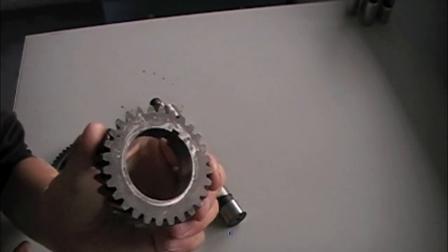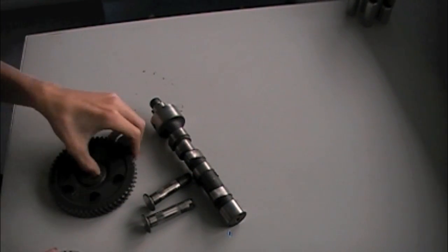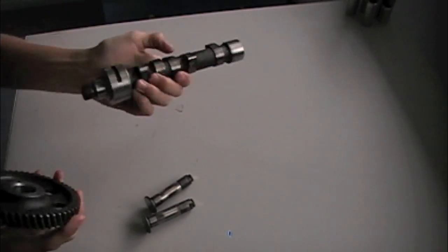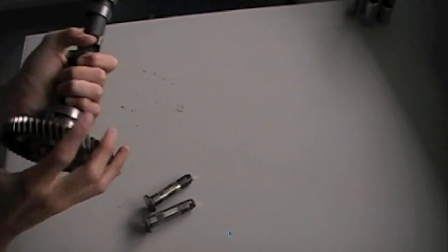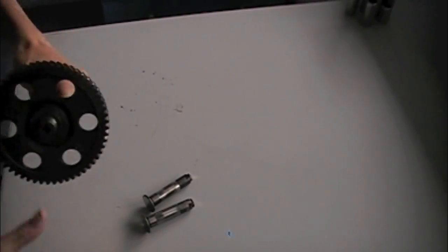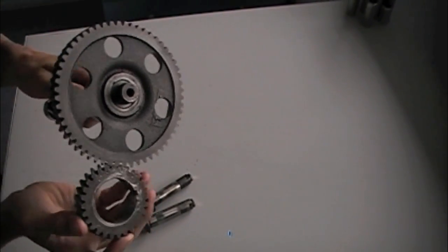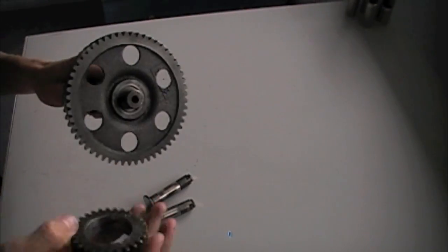First we've got this gear which is connected to the crankshaft. Then you have this gear which is connected to the camshaft. The crank will drive the camshaft and there's twice as many teeth on this gear as on this gear.